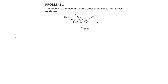By summing forces in x, and taking note that all forces going left are negative and all forces going right are positive, we can get our first equation. So F sub x is equal to R sub x — that is, the summation of horizontal components of the forces is equal to the horizontal component of the resultant.